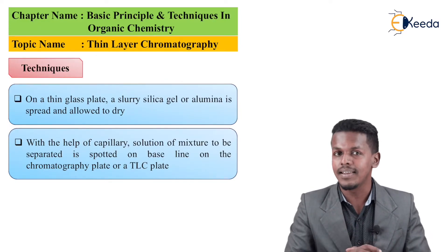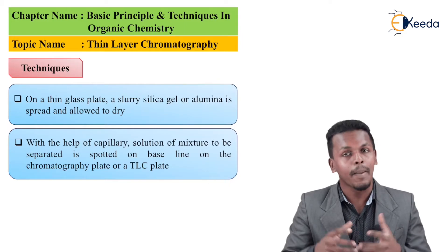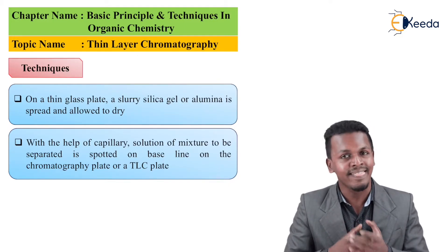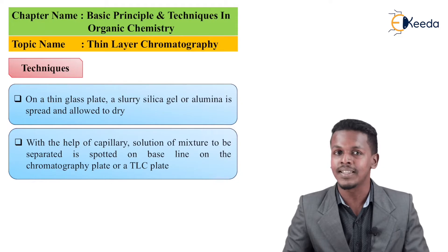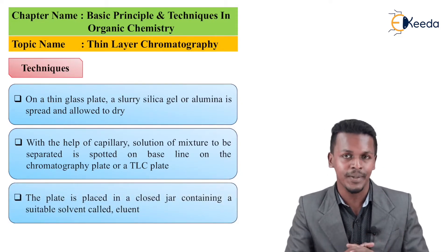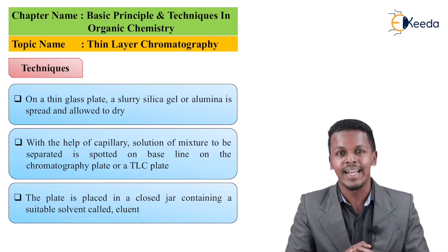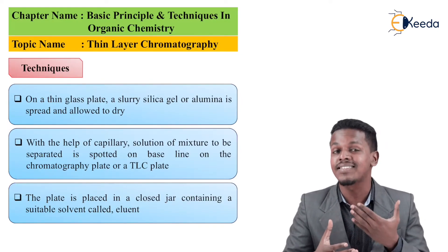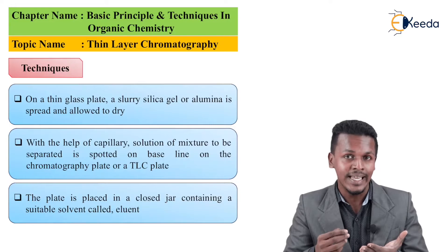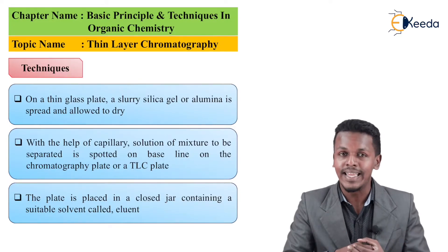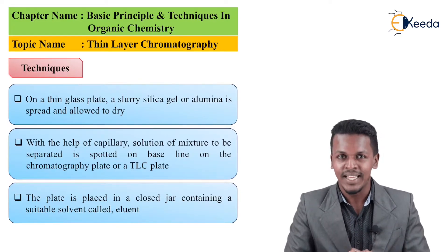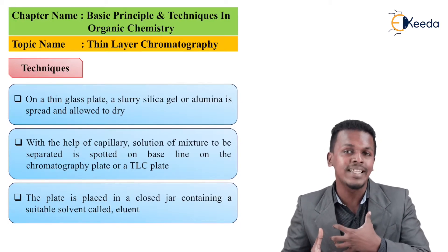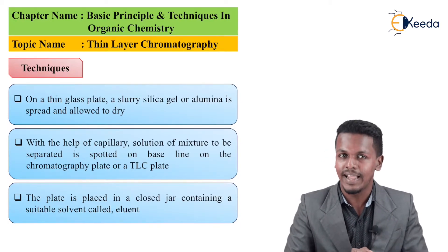This thin layer chromatoplate is dipped in a beaker which consists of a solvent, known as the eluent. This solvent acts as the mobile phase, and the thin layer chromatoplate acts as the stationary phase, on which the mixture has been added on the baseline.